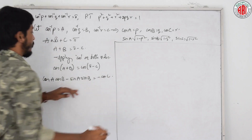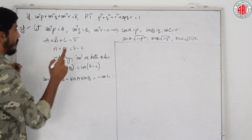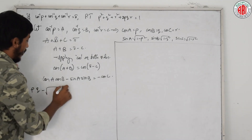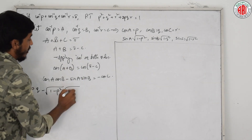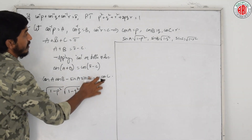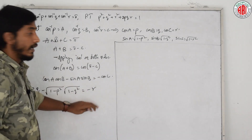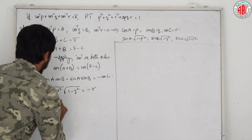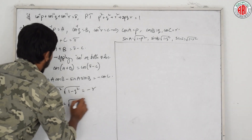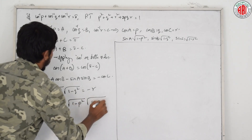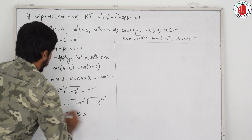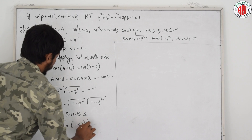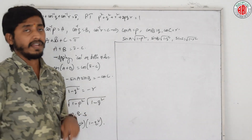Let us substitute and simplify. Cos of A plus B expands as cos A cos B minus sin A sin B equals minus cos C. Substituting: p times q minus under root 1 minus p square into under root 1 minus q square equals minus r. Bringing R to this side: pq plus r equals under root 1 minus p square into under root 1 minus q square. Let us square both sides.